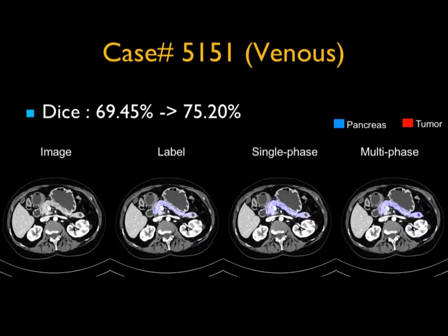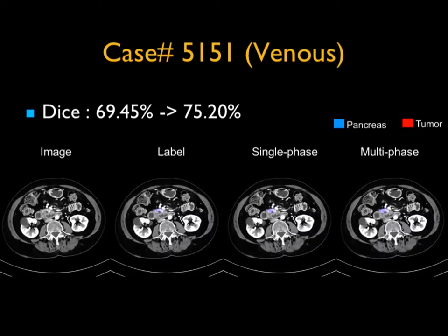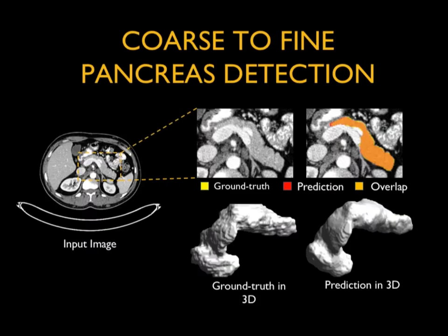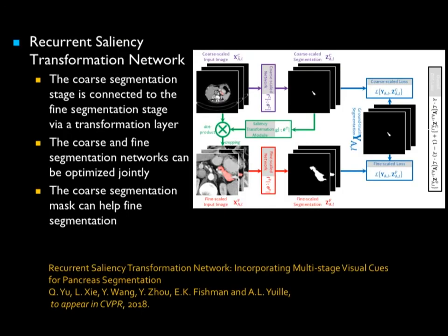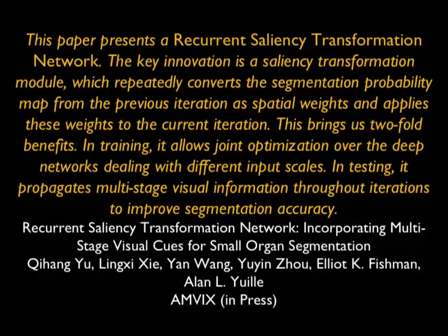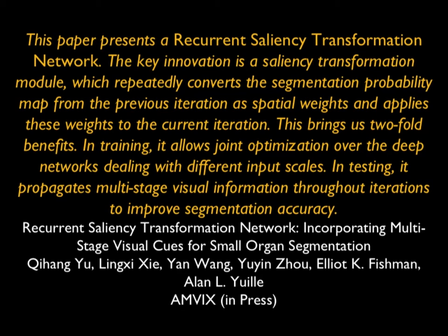We've developed a recurrent saline C transformation network that allows the computer to find the pancreas, then detail around the pancreas, then look at the gland carefully, pulling out all critical information. That's how we developed an algorithm which can find the pancreas and also find tumor. This is a novel technique, and with AI, developing novel techniques is critical. This technique will likely work not only in the pancreas but in other organs, though we're focusing on the pancreas.